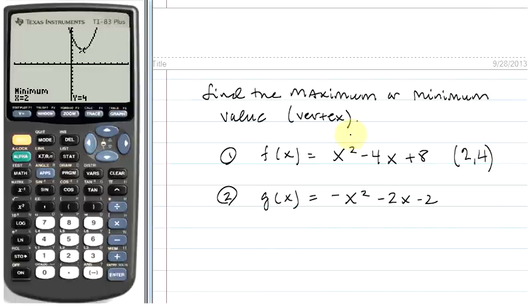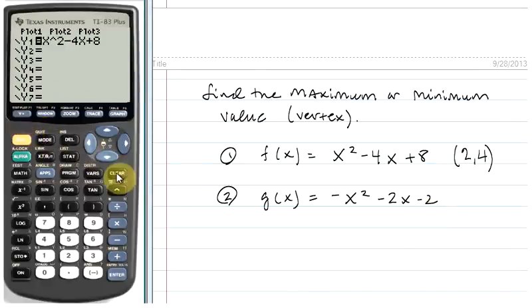Okay, let's check out the second example. G of x equals negative x squared minus 2x minus 2. I'm going to go to y equals and clear out the first function and type in the second function. I'll use the negative key for the negative x squared, then minus 2x minus 2.